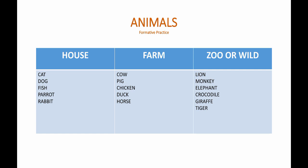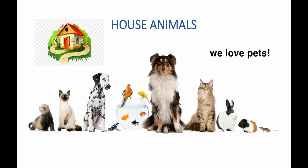monkey, elephant, crocodile, giraffe, and tiger. House animals are animals that live in the house or at home. We can keep these animals inside the home — for example, dogs, cats, parrot, fish, hamster, and rabbit. We love pets.